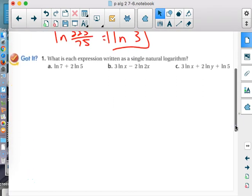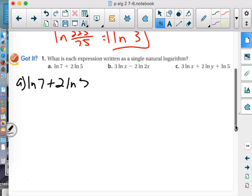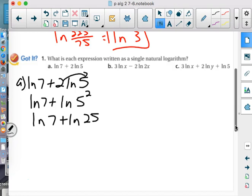Alright, so let's take a look at our Got It. And I'm going to ask you guys to help out a lot more. Where do we start? We've got it 1-a. The 2, got to go back up as a power. Plop it back up there. Do you know what 5 squared is? 25.